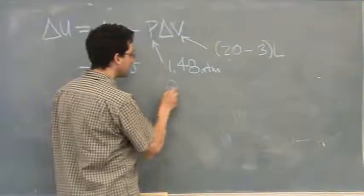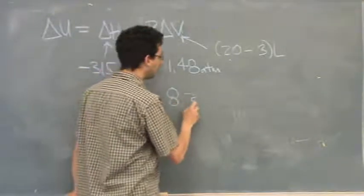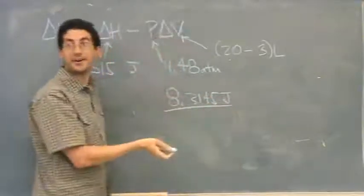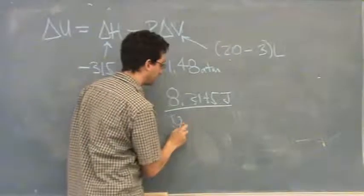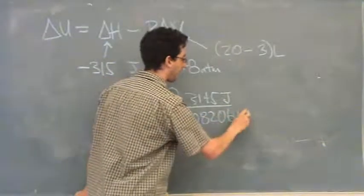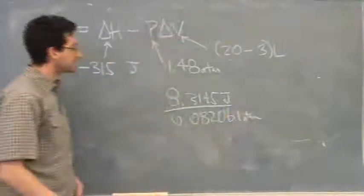The way I remember the conversion, you don't have to remember this, but 8.3145 joules, that R, divided by the other R, is the conversion. It's 101.325. That's the conversion.